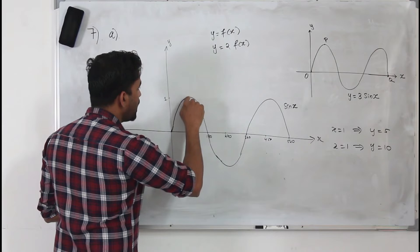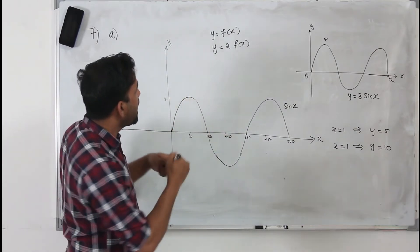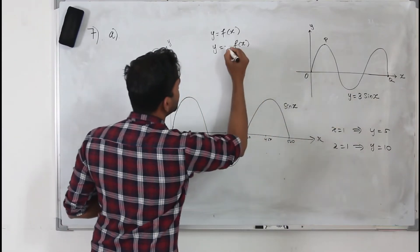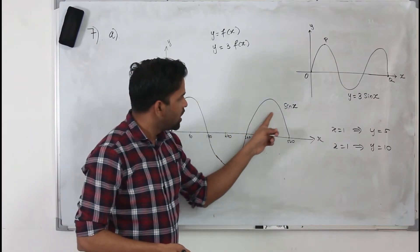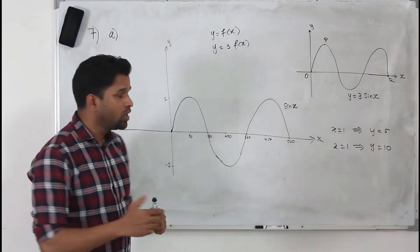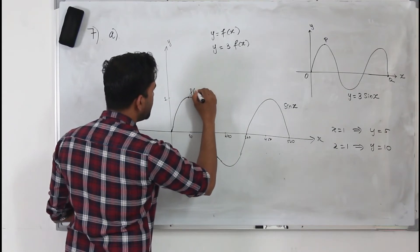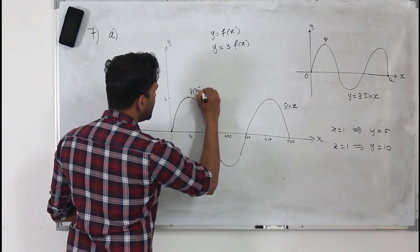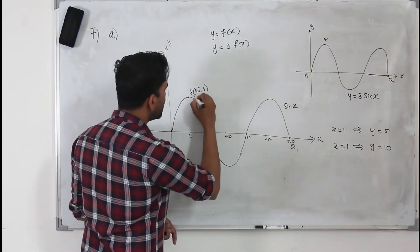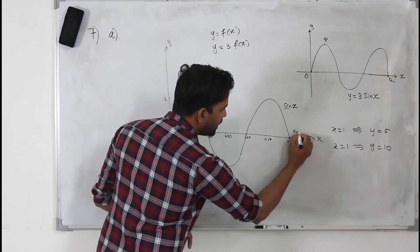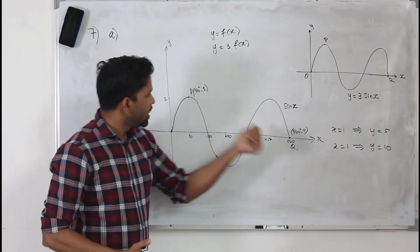The y values, if you take any point, will be multiplied by 'a' units. In our case it's 3 sine x, so they will be multiplied by 3. Comparing this curve with 3 sine x: on the sine x curve, the maximum point is at 90 degrees comma 1, and Q is at 540 degrees comma 0. When you multiply by 3, the x-intercepts stay the same. You've got two points — P and Q.